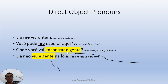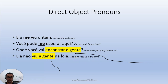A gente is replacing 'us' / 'nós' in Portuguese. 'Você vai encontrar a gente,' 'ela não viu a gente na loja.' Here in Brazil it's much more common in speech and everyday conversation than in writing. In writing it's considered not so good, but you can say it all the time, and you can also write it when talking with friends on WhatsApp or something like that — it's not a problem.